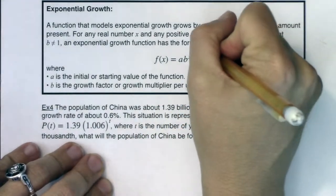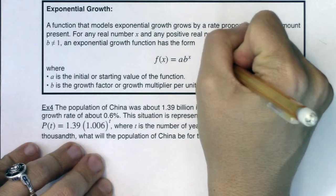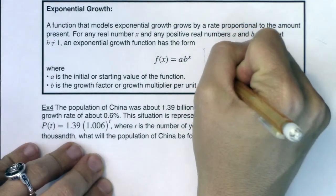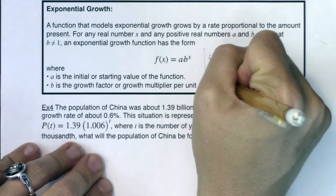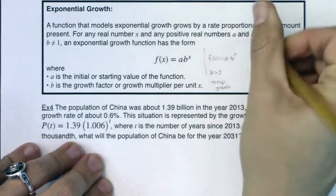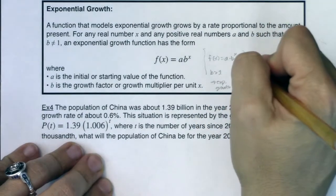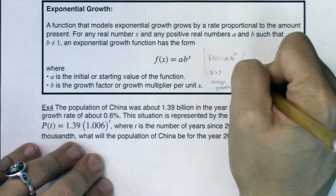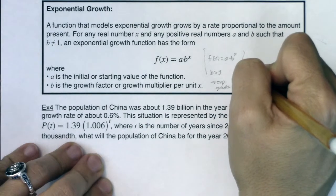So I want to again just rehash this. If you have a times b to the x as your function and b is greater than 1, you are talking about exponential growth. If you have b trapped between 0 and 1, you are talking about exponential decay.